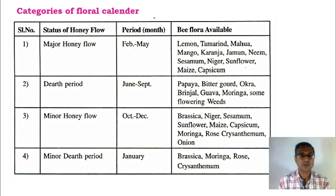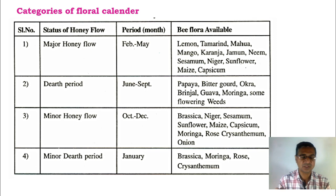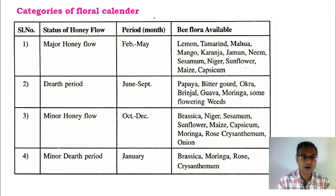These are the categories of the floral calendar, where we can categorize into four different statuses. The major honey flow is observed in the months of February up to May, during which flowering of those plants is observed and bee flora is available. In the dearth period, certain bee flora is also available, and that period is about June up to September. The third is the minor honey flow, which is observed in October up to December, and bee flora is available in those months also. In the month of January, a minor dearth period is observed. Associated plants with available flowering include brassica, moringa, rose, and chrysanthemum.